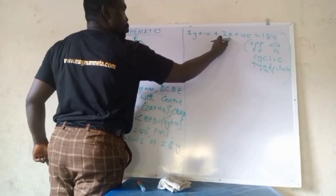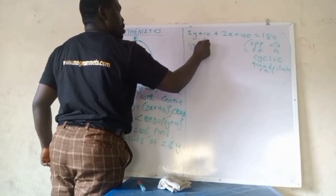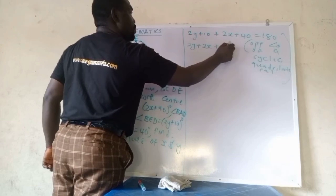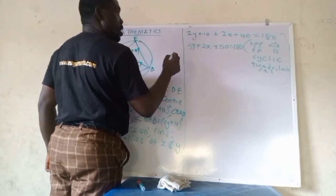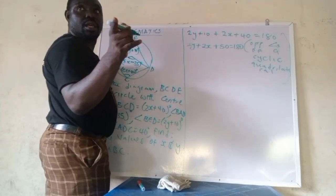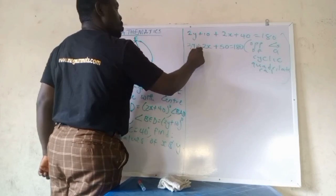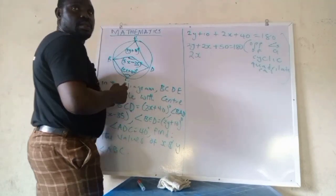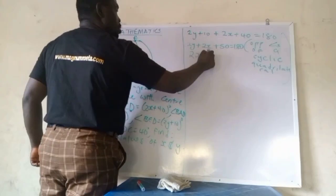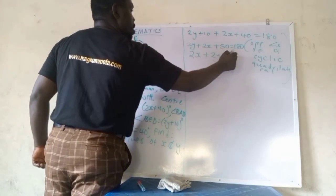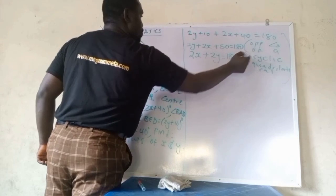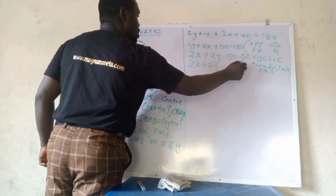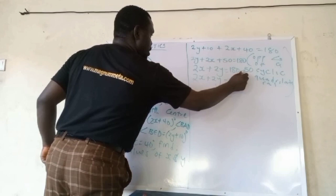So from here we have 2x plus 2y plus 50, then 2x plus 2y equals to 180 minus 50. So we have 2x plus 2y equals to 130 degrees. That's 180 minus this, we have 130 degrees.